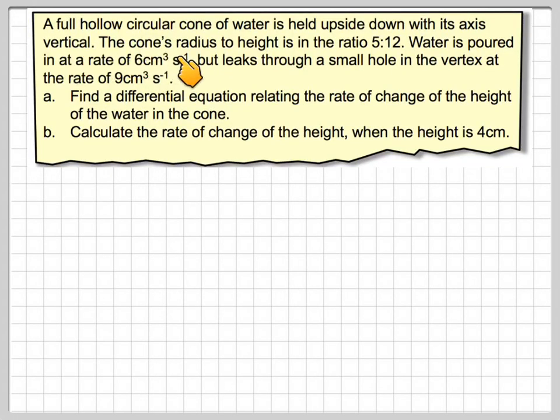A hollow circular cone of water is held upside down with its axis vertical. The cone's radius to height is in the ratio 5:12. Water is poured in at the rate of 6 cm³/s but leaks through a small hole in the vertex at the rate of 9 cm³/s.